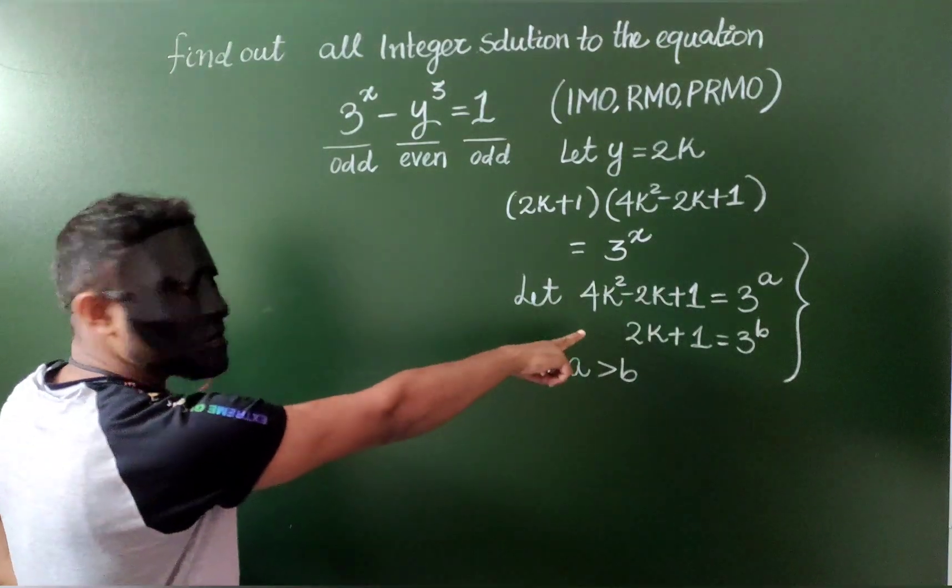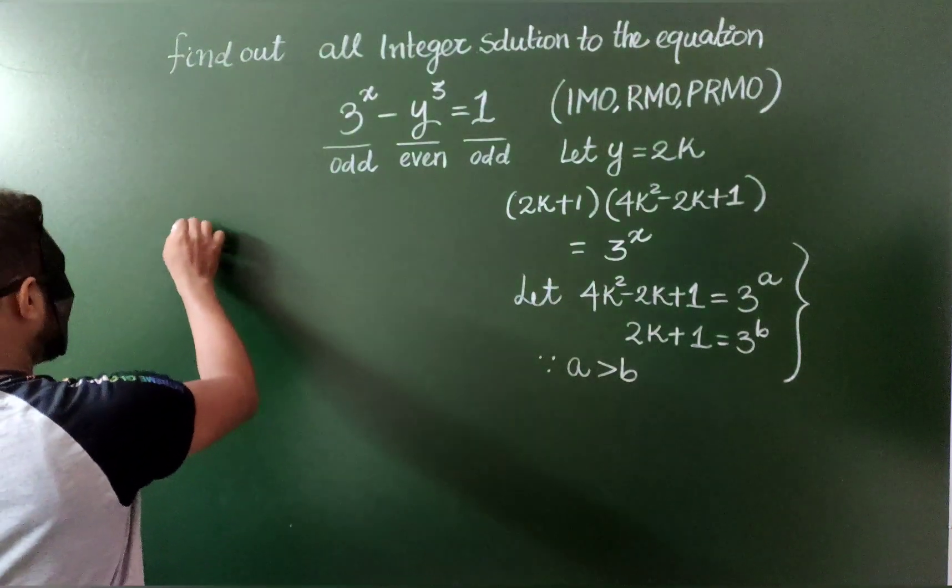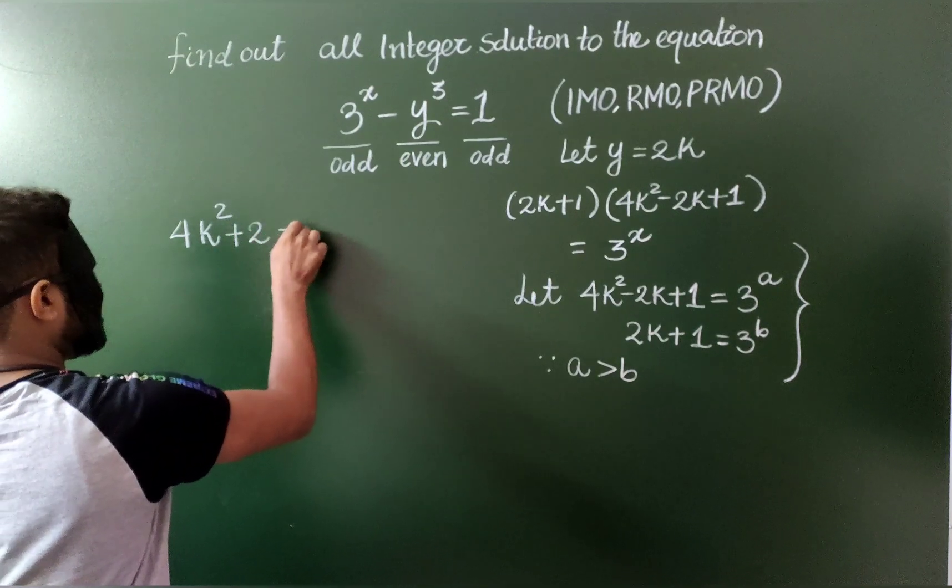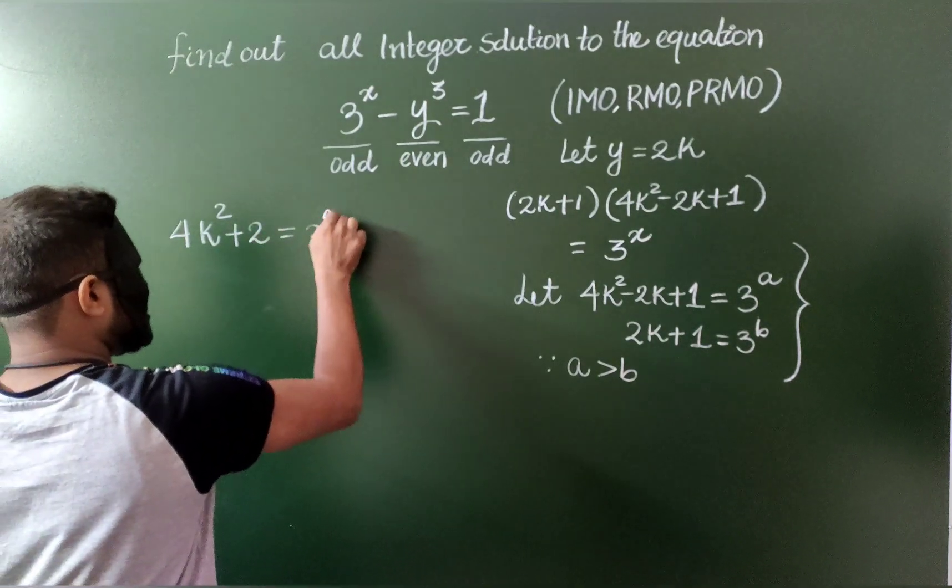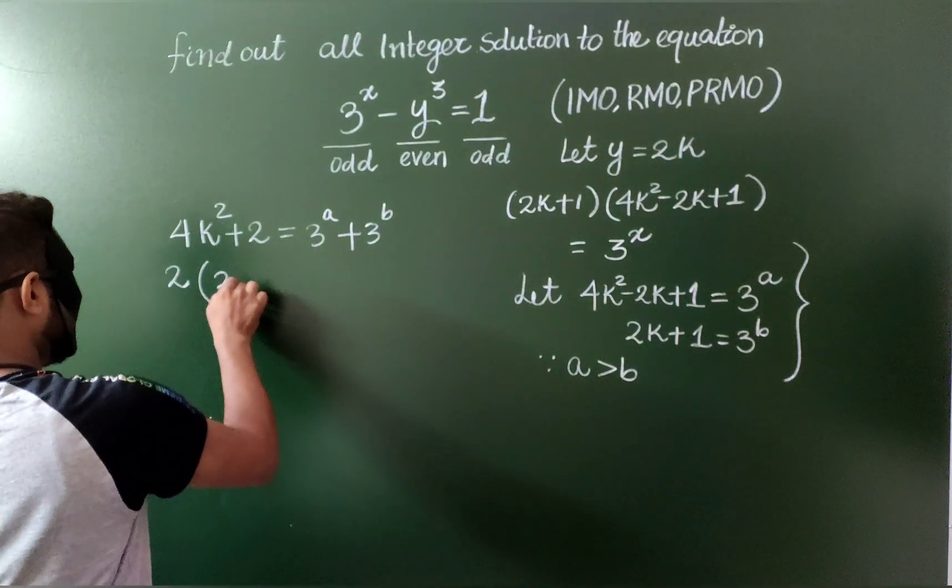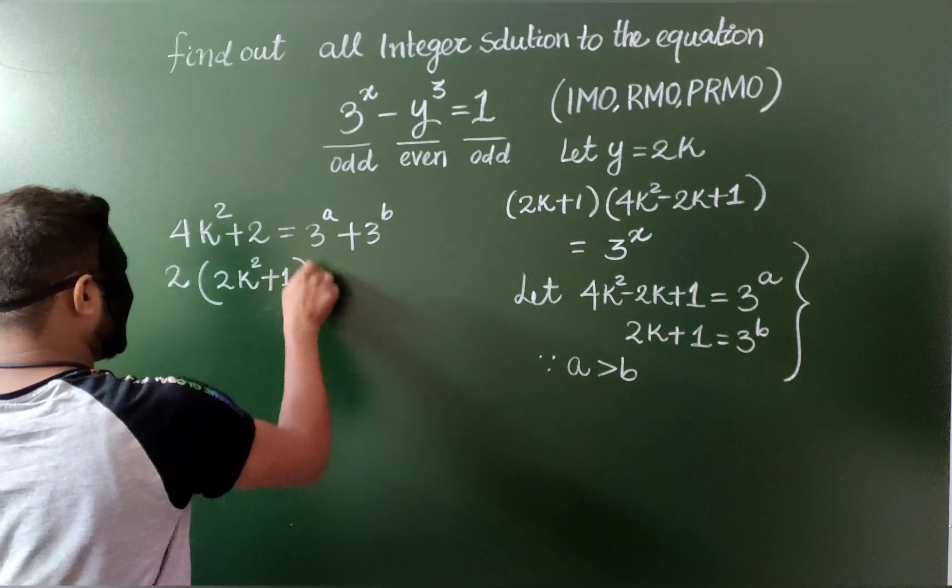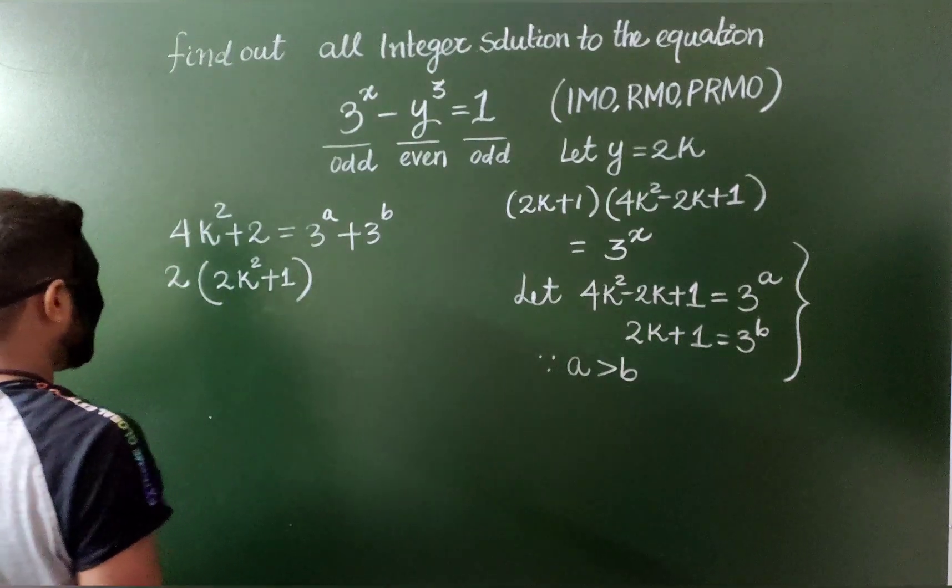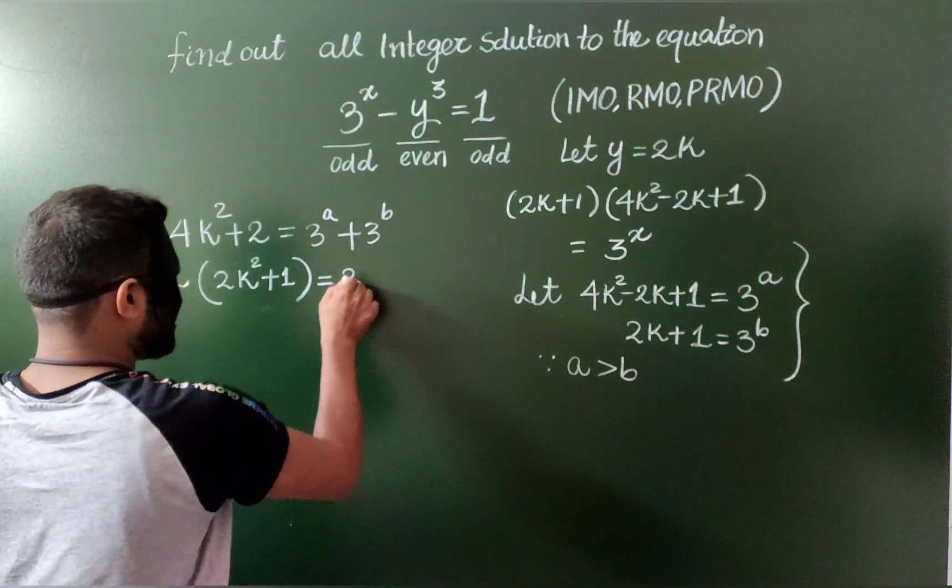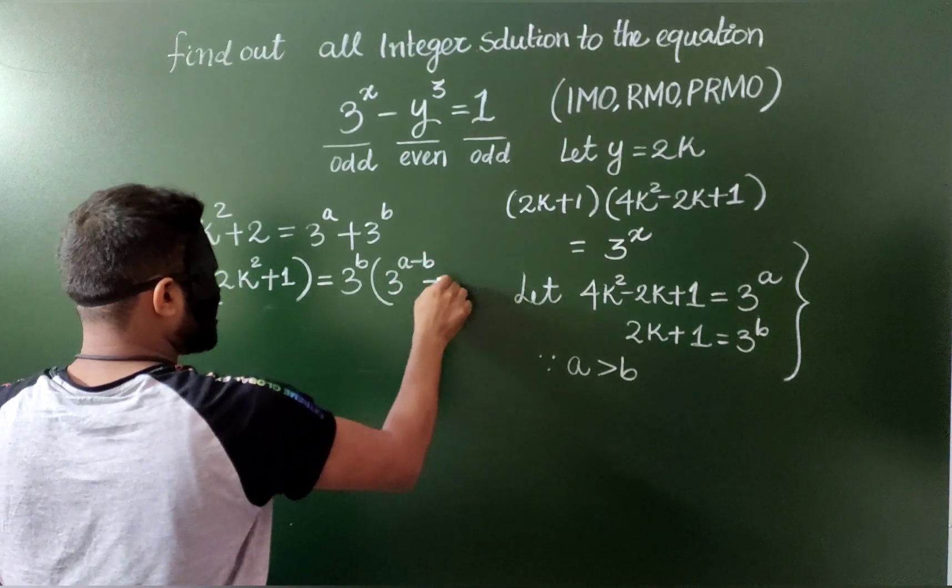Let's add both the equations. If I add both the equations, what I will get is 4k square minus 2k plus 1 plus 2k plus 2 is equal to 3 to the power a plus 3 to the power b. Now if I factorize 2, it becomes 2 times k square plus 1. Now because a is greater than b, I can factorize this as 3 to the power b in bracket, 3 to the power a minus b plus 1.